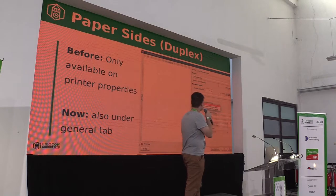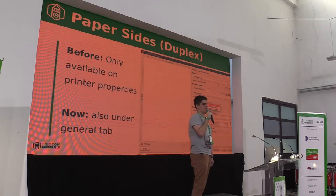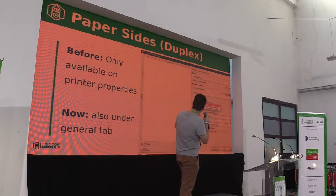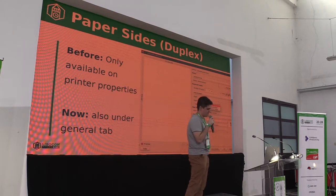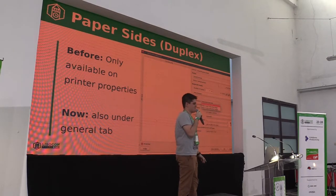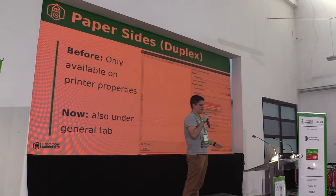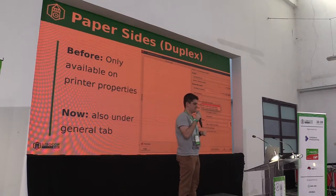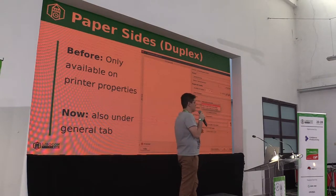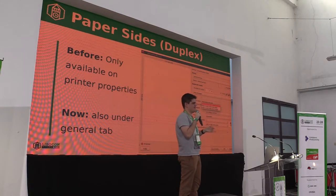We also added an option to print on both sides of the paper — also known as duplex. Before, you could do that through printer properties, which is kind of cut off but it's right there in the corner. On Linux, we have a generic printer properties dialogue, so you could go there and set whether you wanted to print on both sides or only one side. It's not very direct, but it works.